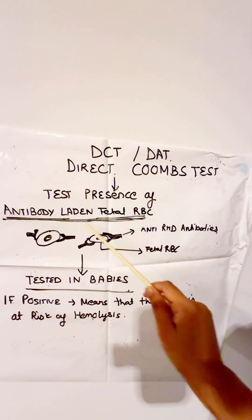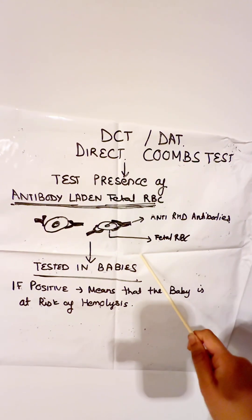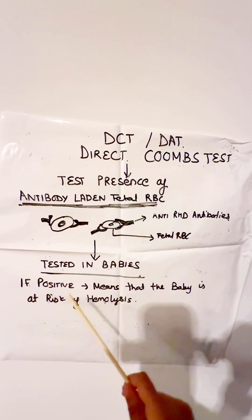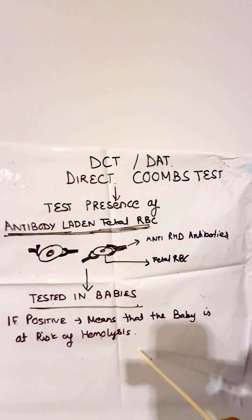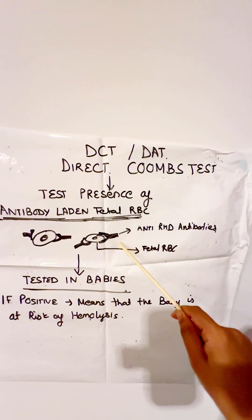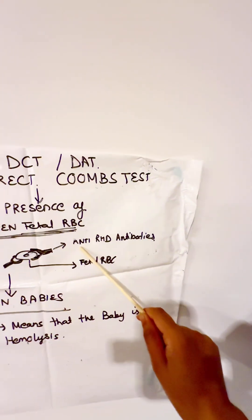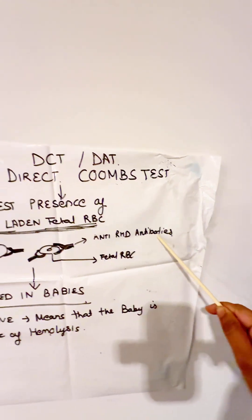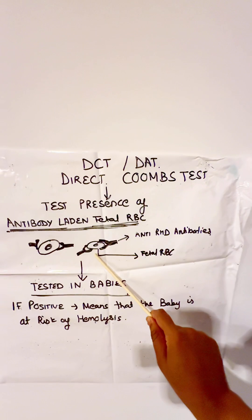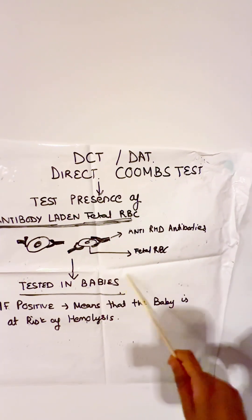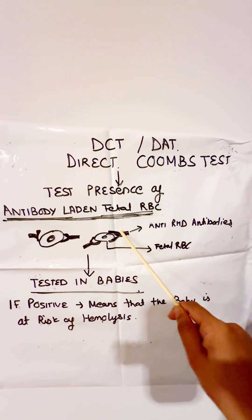We add a solution that detects this complex. If the test is positive, it means the baby is at risk of hemolysis because the baby's RBCs are being attacked by the mother's antibodies. These are anti-RhD antibodies crossing the placenta, attaching to fetal RBCs, and causing hemolysis.